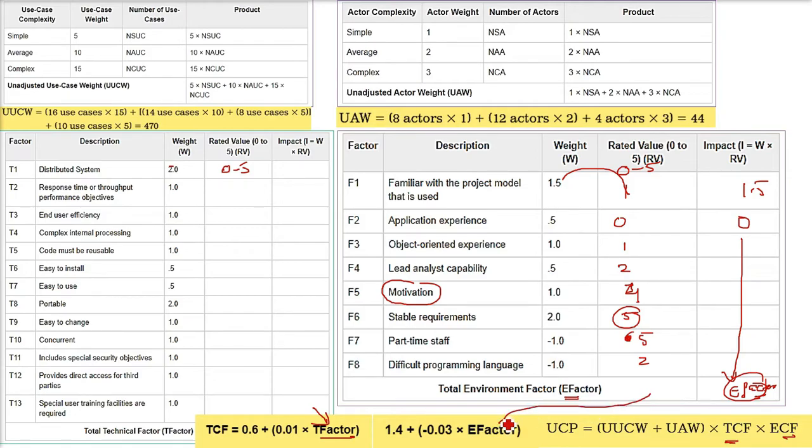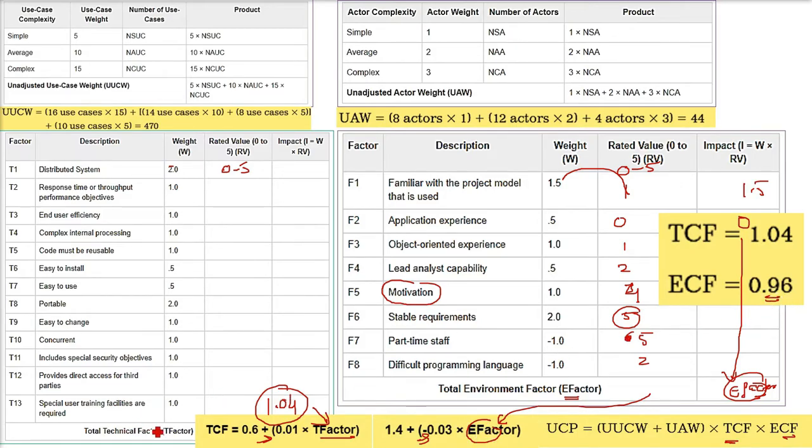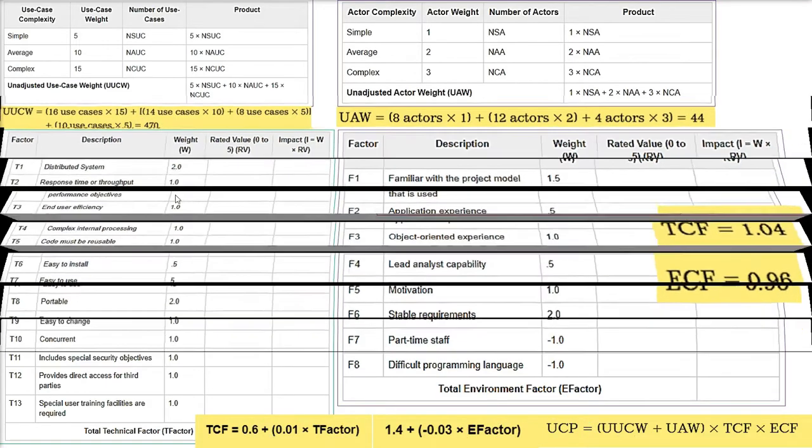So I am just saying that we have already done the computation. You have given the value, rated value. Let us say that the TCF comes to be 1.04. ECF comes to be 0.96. You got the T factor. Put it here. You will get the TCF. You got the E factor. Put it here. You will get the ECF. You may give any number from 0 to 5 in all the columns I said. So the values may change. I have given these values. So I get 1.04 and 0.96. So now what are all values you have? UUCW is 470. UAW is 44. TCF is 1.04 and ECF is 0.96.